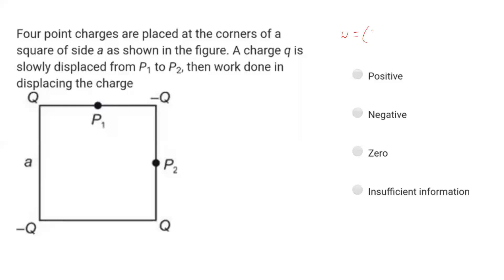The potential difference is the final potential minus the initial potential — that is, the potential at P2 minus the potential at P1. To find this, we consider the contribution from each of the four charges: the first charge, the second charge, the third charge, and the fourth charge.